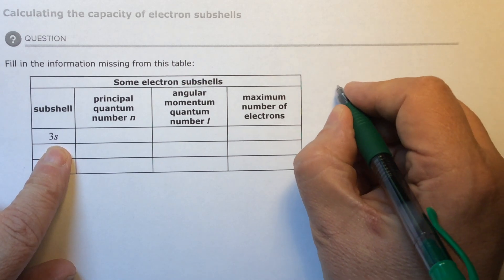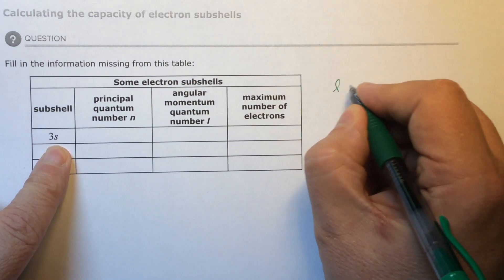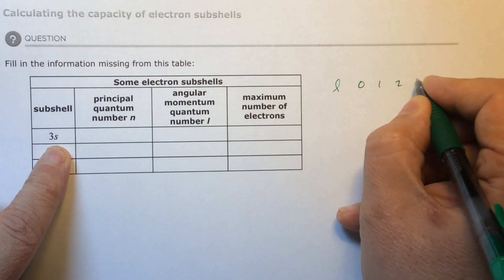and then a subshell. So the L can be zero, one, two, or three.